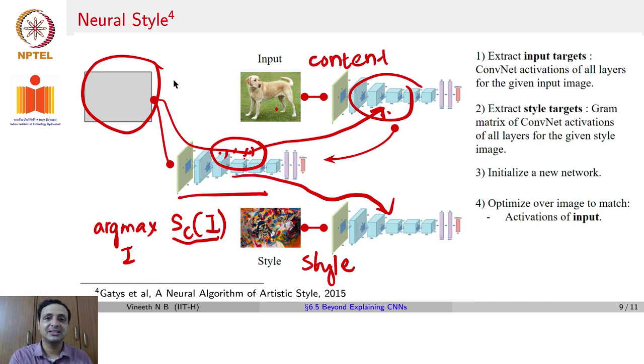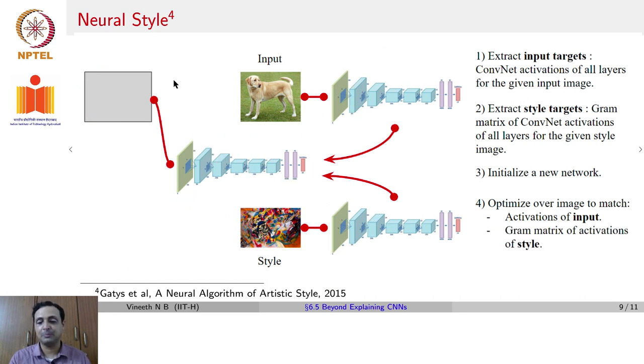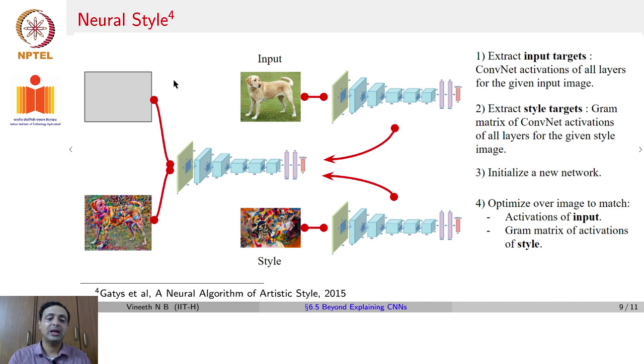Similarly, minimize the distance between the gram matrix of the covariances between activations here, and the gram matrix of the covariance between the activations in the style when you forward propagate the style image. When you combine these two, you end up getting an image, which takes the style from the style image, and the content from the input image. And that is the output that you get while you started with a simple gray image.